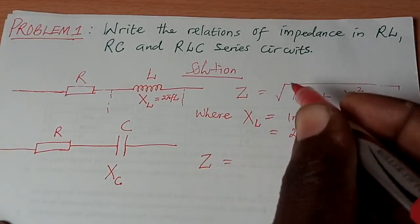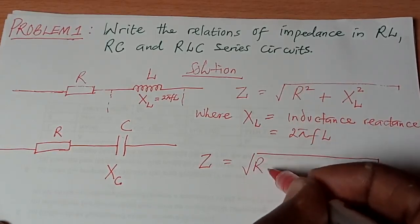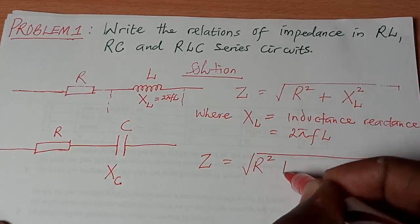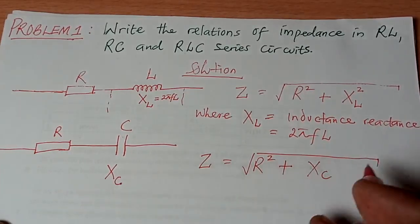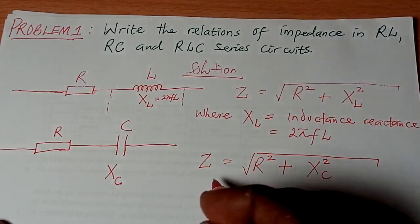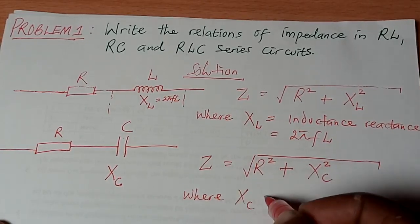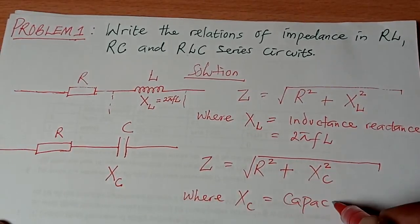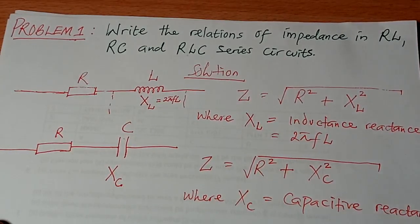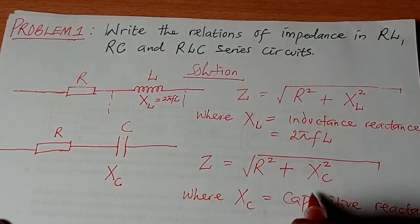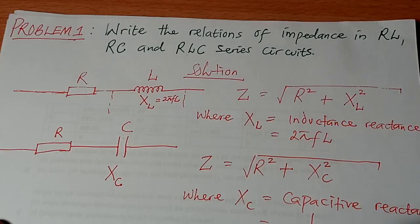Again, in a similar way, you have the impedance now as Z is equal to R squared plus X sub C, the resistance of the capacitor, also squared. Where this X sub C is called capacitive reactance. And the formula for it is the reciprocal of 2 pi F C.